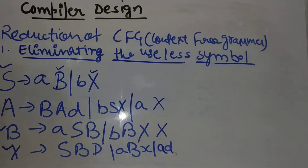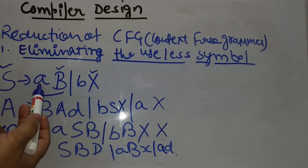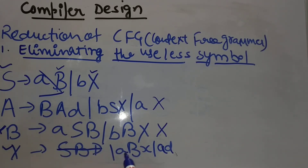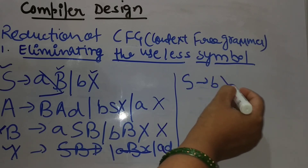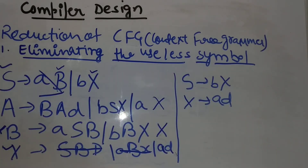Okay friends, when we are not considering A and B, we will remove B. If we remove B, then we remove A. So what remains is simple: S tends to B. Now friends, look at X — there is a symbol, there is a grammar: S, B, D. When B is not terminal, there is no use of this. If we remove A, B, then we remove A. So our final grammar will become: X tends to B, X. And our second production is X tends to A, D. This will be the final grammar for us.